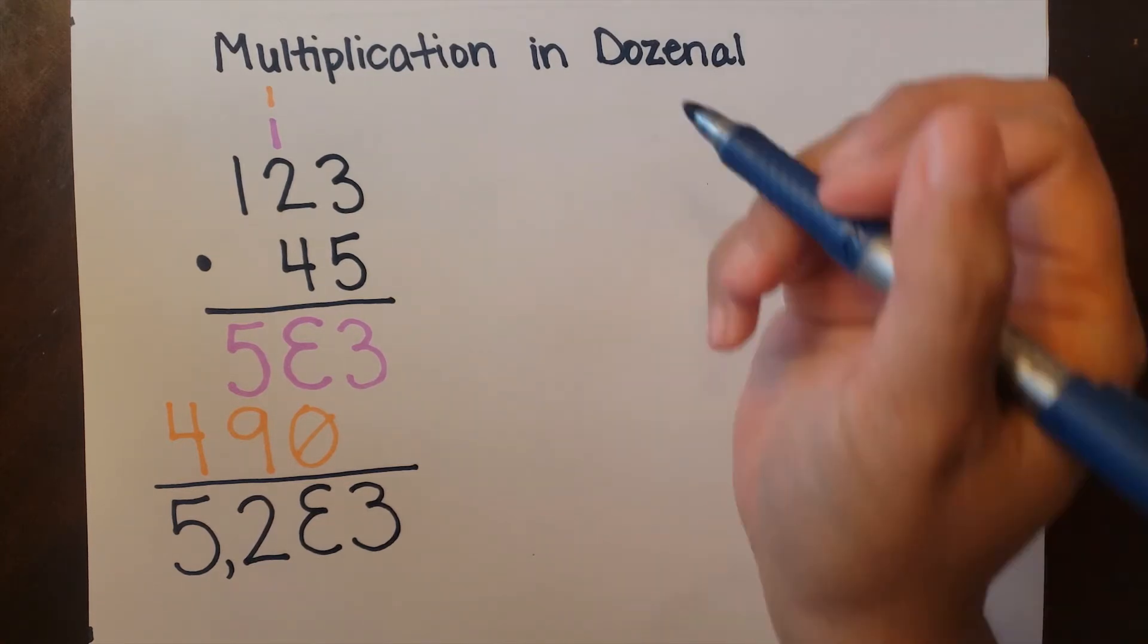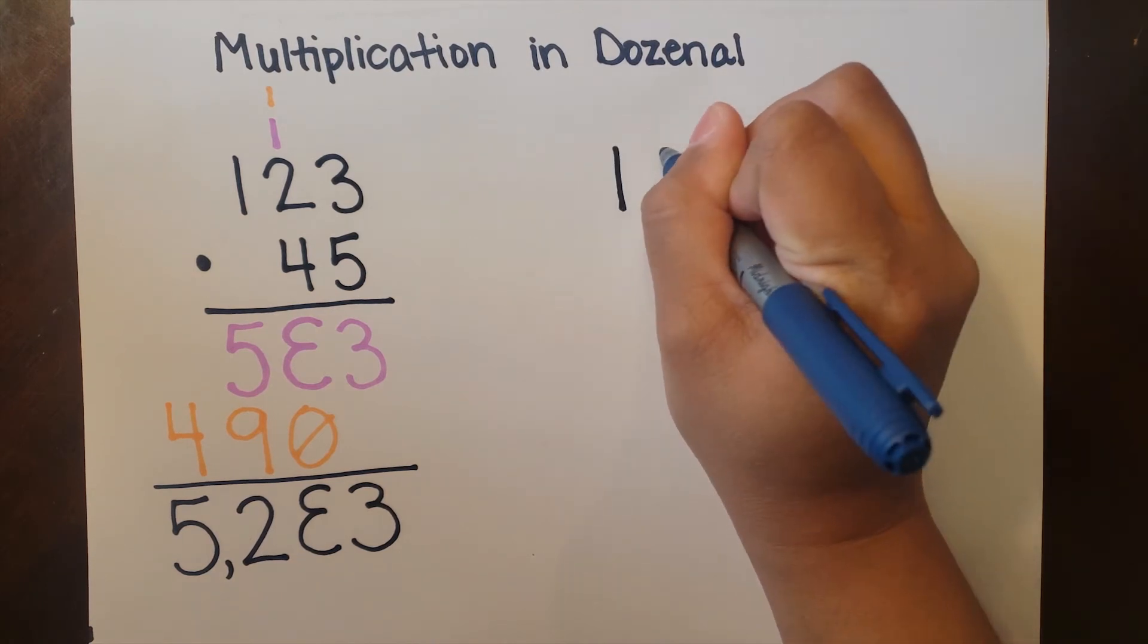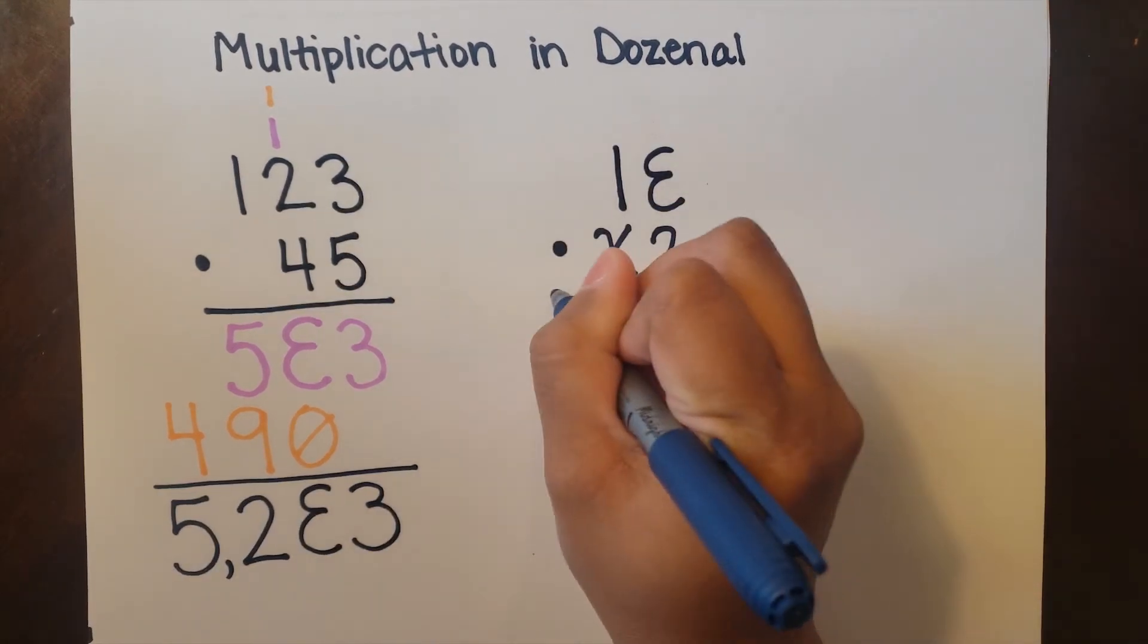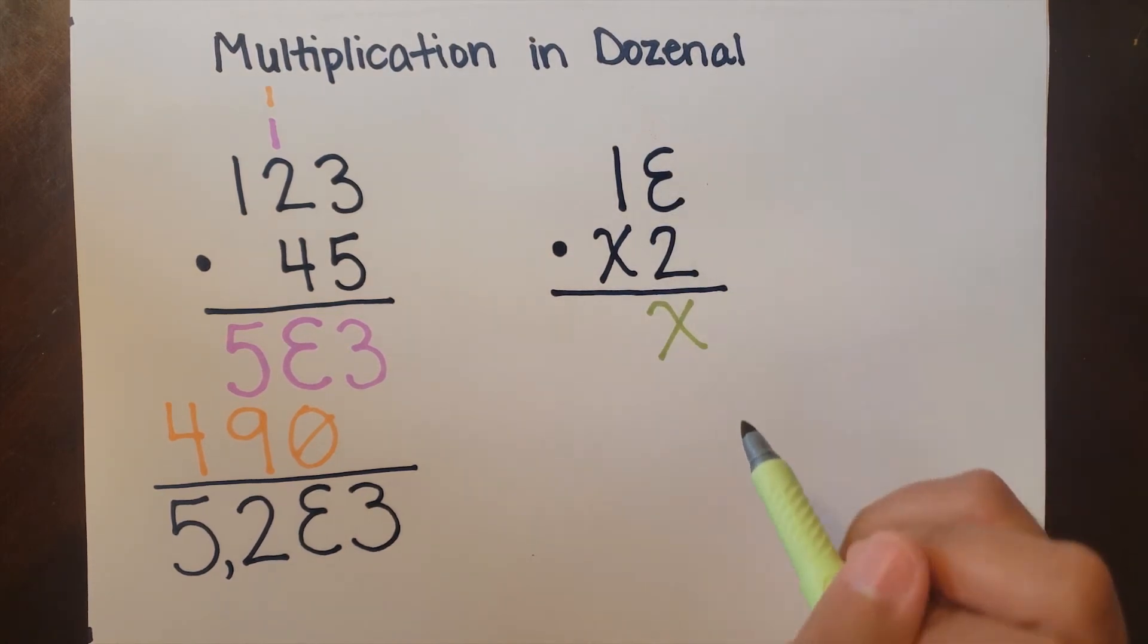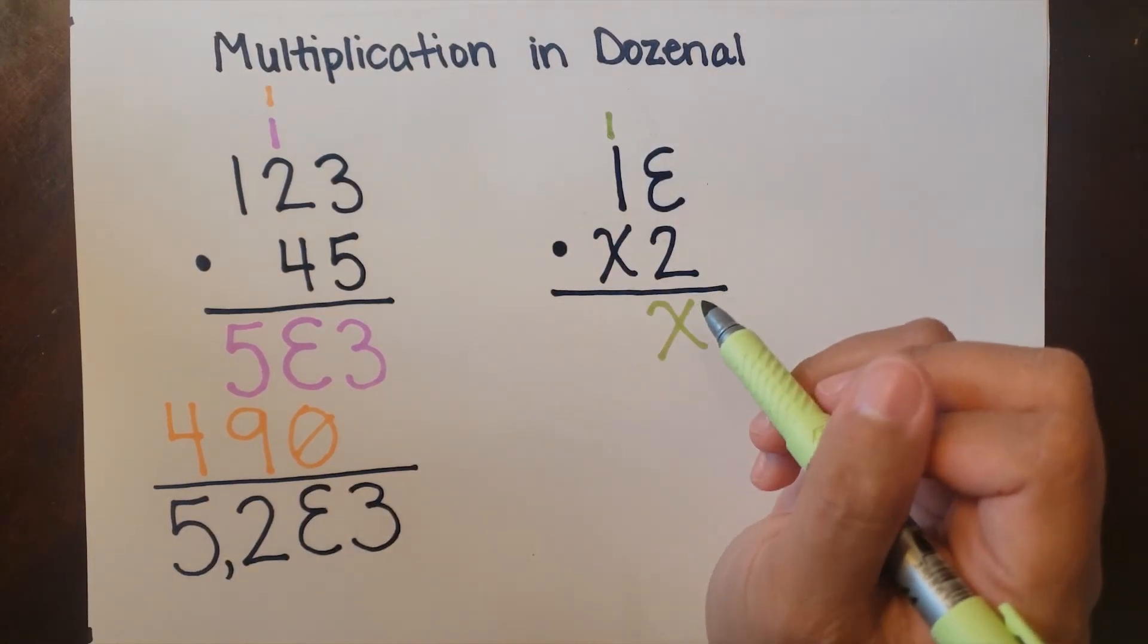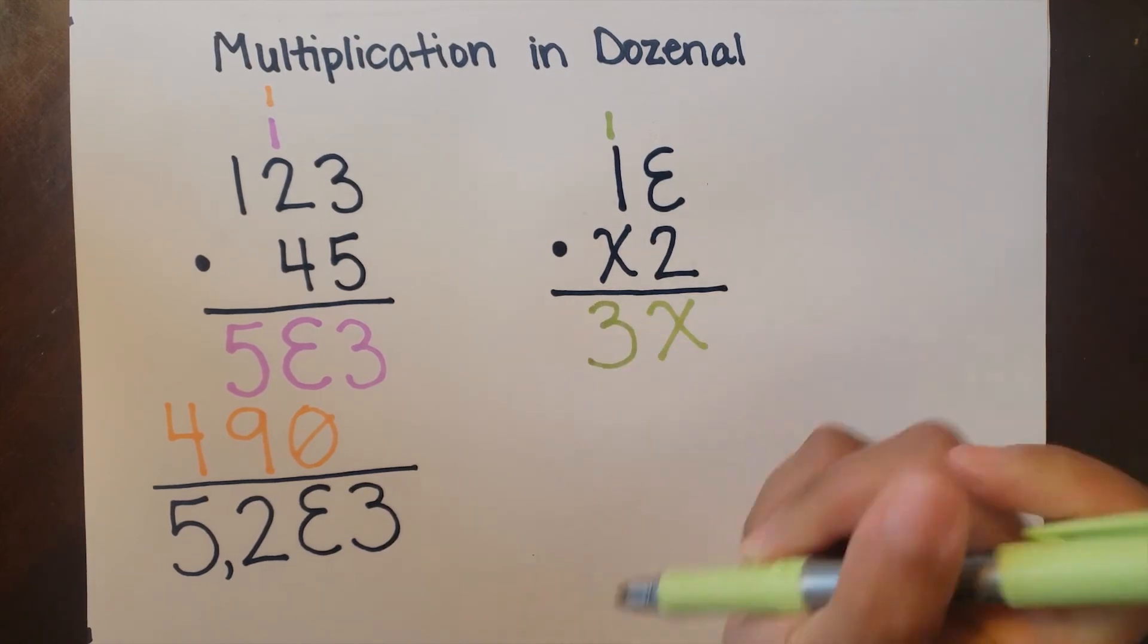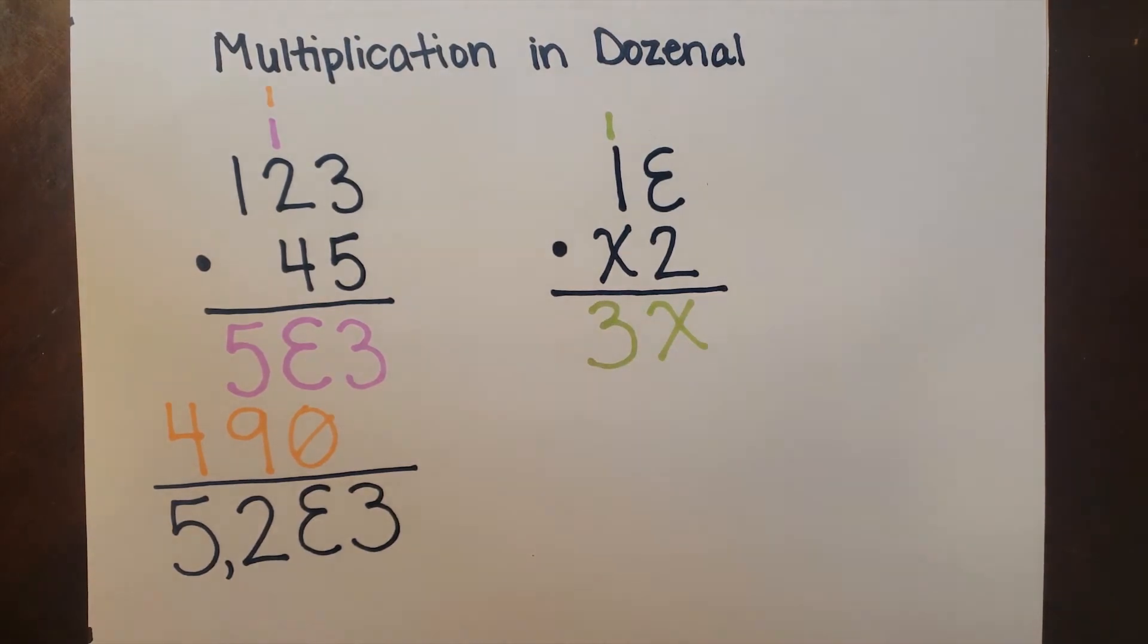Now let's try one more example. I'm going to take 1 dozen and L and multiply it by deck doe 2. 2 times L is 1 doe deck. I bring up the 1 and carry down the deck. 2 times 1 is just 2. We add the 1, giving us 3. So for this row we have 3 doe deck.